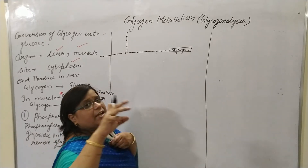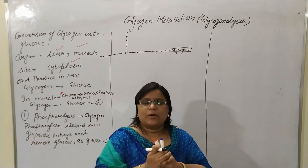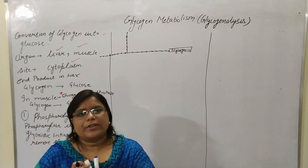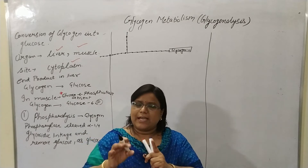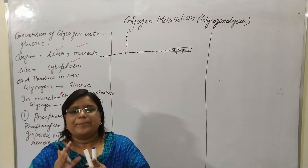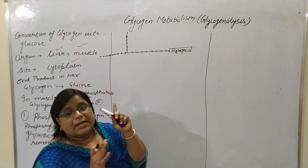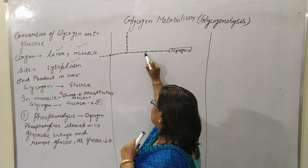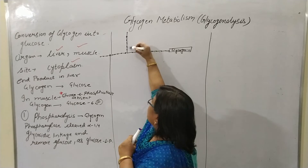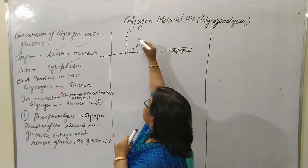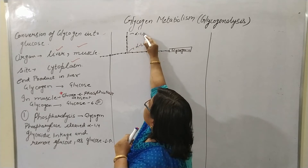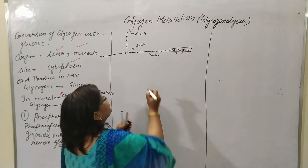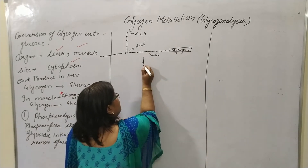Here, glycogenin is the core protein — as discussed in the glycogenesis lecture (available on MS Science Academy YouTube channel). Now, glycogen phosphorylase acts on the alpha-1,4 glycosidic linkage on the linear side, continuously removing glucose until the limit dextrin is formed.